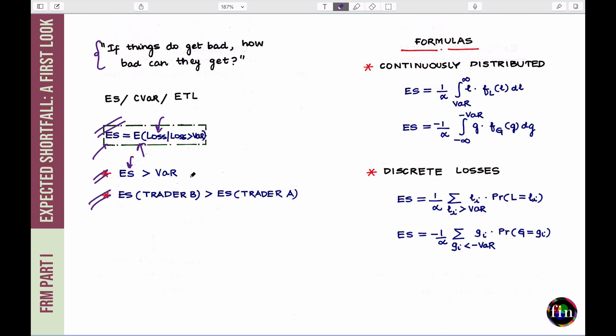Number two is, if ES was the risk measure which was being used to provide or impose risk limits on trader A and trader B, then based on the positions that they have put for themselves, the ES would have detected that the trader B is taking riskier positions as compared to trader A. Because if I were to take the average probability weighted of losses sitting in the tail, then the ES of trader B would have come out to be higher. So, in that sense, we would not have been stuck with the problem which we had with the VAR.